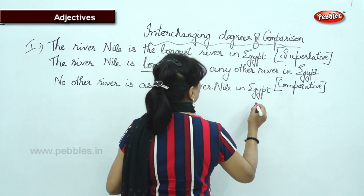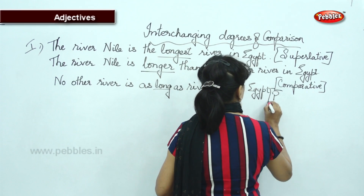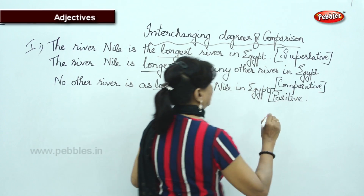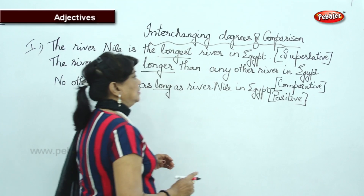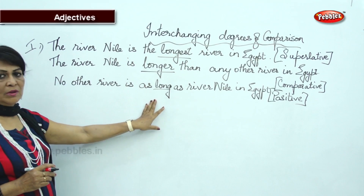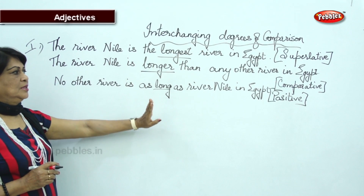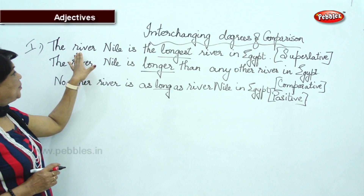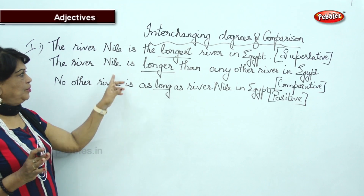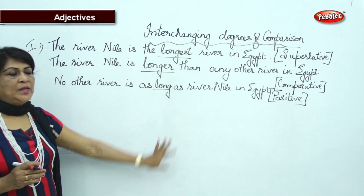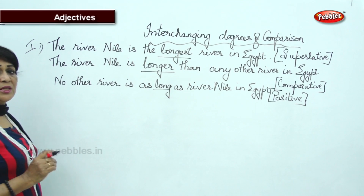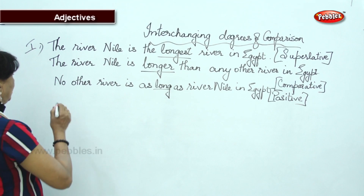So: 'long' — positive, 'longer' — comparative, 'longest' — superlative. The River Nile is the longest river in Egypt. If you use this format — if I say the River Nile is one of the longest rivers in the world — then how will you change it? This is the second pattern.